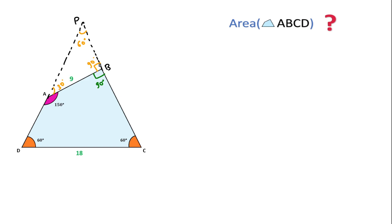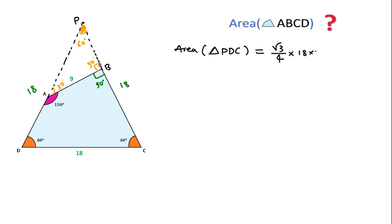We can see that triangle PDC is an equilateral triangle, because all its angles are 60°. The length of CD is 18 units, which means PD and PC are also 18 units each. So the area of equilateral triangle PDC equals (√3/4) × 18² = 81√3 square units.